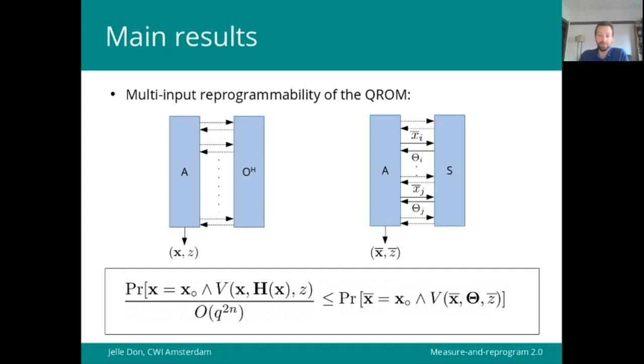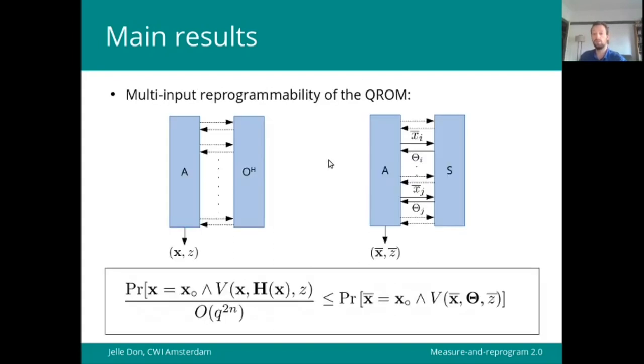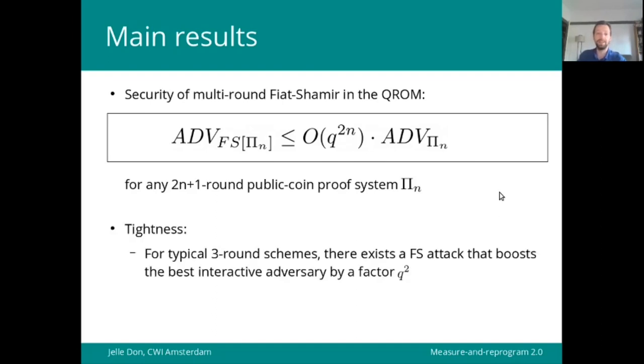So that's the main technical result. It may seem a bit abstract at this point, but we can actually use it and apply it to prove security of multi-round Fiat-Shamir. Multi-round Fiat-Shamir takes some public coin interactive proof system and turns it into a non-interactive scheme. We show that the advantage of the best adversary against the non-interactive scheme is at most order q to the power 2n times as big as the best adversary against the interactive scheme.